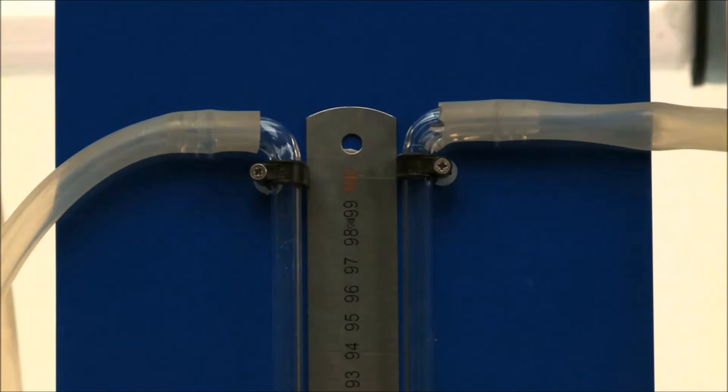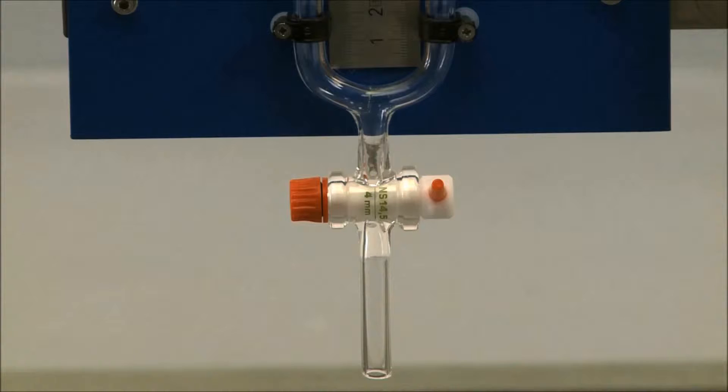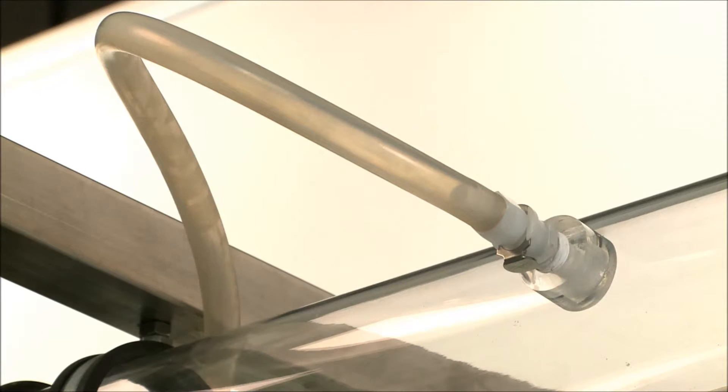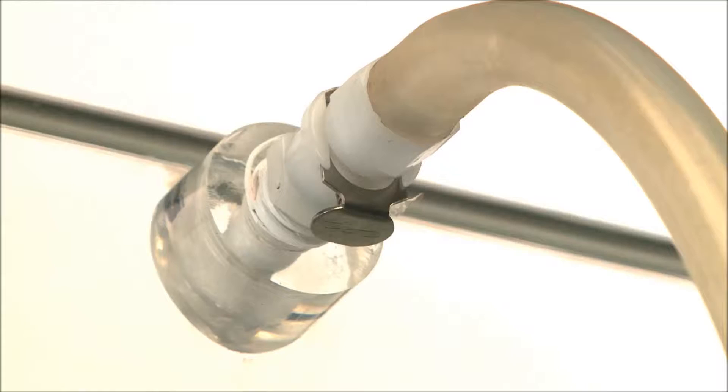A U-manometer is used to determine the pressure losses in the plant through pressure sampling spots that are placed before and after the elements to be tested.